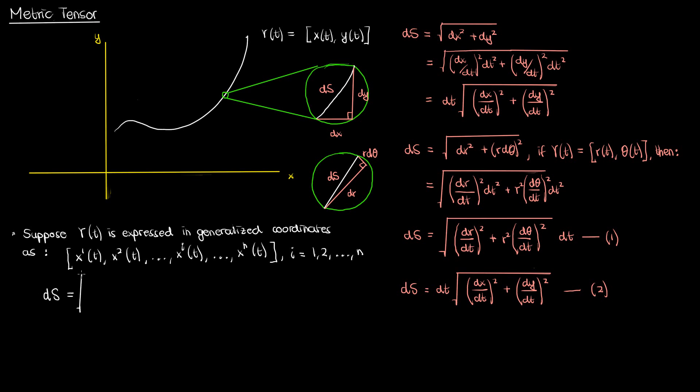According to this pattern there's usually a square root of something and a dt outside the square root. Inside the square root we have the derivative of one coordinate x super i with respect to t, times the derivative of another coordinate x super j with respect to t. In equations 1 and 2 we had the derivatives of the coordinates multiplying themselves — dx by dt times dx by dt, dr by dt times dr by dt — and this general expression allows that. But since this is a more general expression, we're also allowing for cross terms. This expression is currently incomplete: we need something that allows us to sum over the product of these derivatives, and we need a coefficient term that for instance accounts for the r squared multiplying one of the derivative terms, like in the polar arc length element.